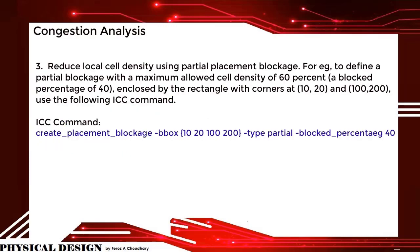Reduce local cell density using partial placement blockage. For example, to define a partial blockage with a maximum allowed cell density of 60%, a block percentage of 40 is used, enclosed by a rectangle with corners at coordinates 10, 20 and 100, 200.